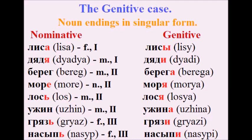Fox — Лиса → Лисы. Uncle — Дядя → Дяди. Shore — Берег → Берега. Sea — Море → Моря. Elk — Лось → Лося. Dinner — Ужин → Ужина. Mud — Грязь → Грязи. Embankment — Насыпь → Насыпи.